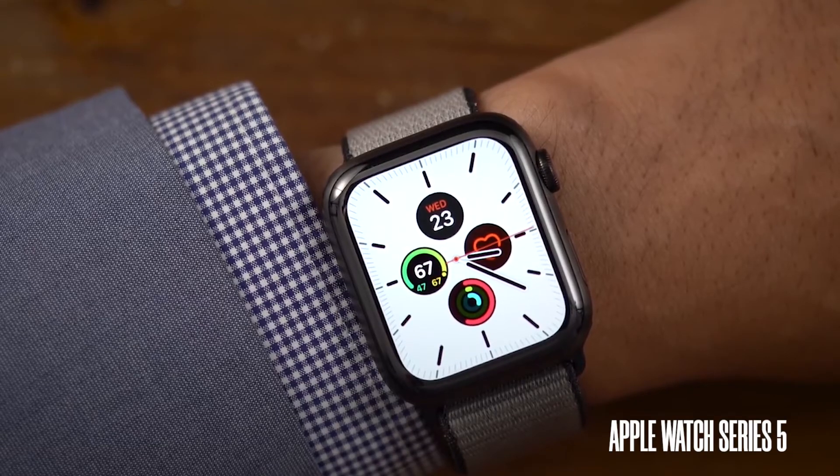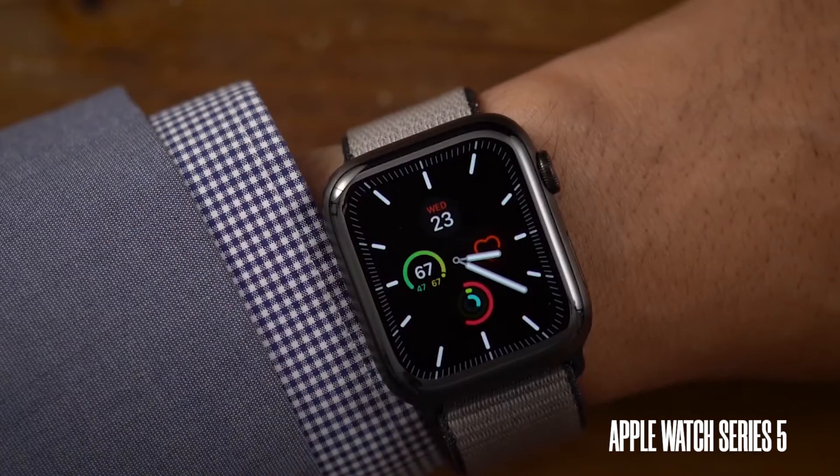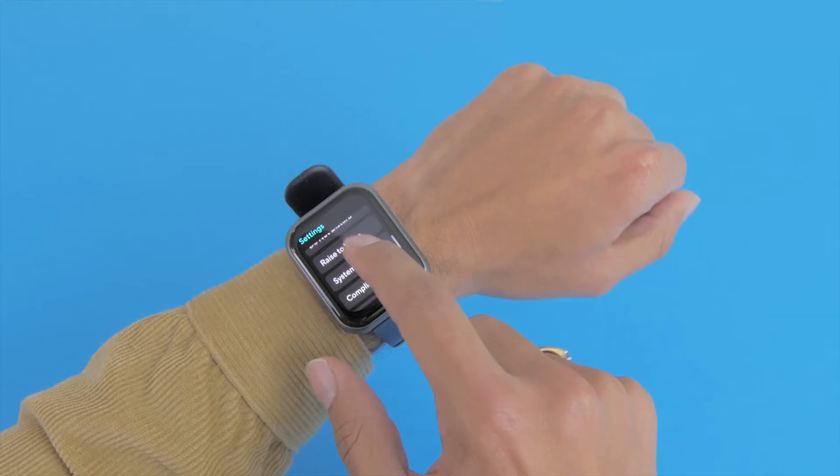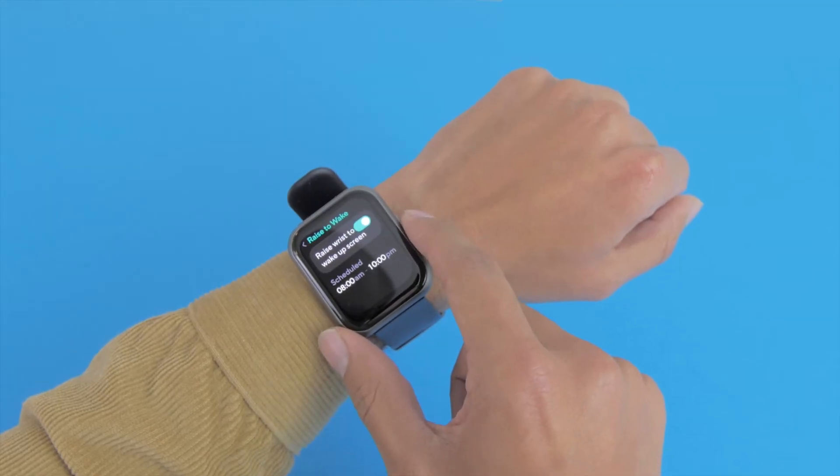This watch doesn't have an always-on display feature like your Apple Watch. However, the raise to wake is quite efficient and you can schedule it as well. While you can't answer phone calls on this watch, so for instance it doesn't have a microphone or speaker to do that, you can always reject phone calls.